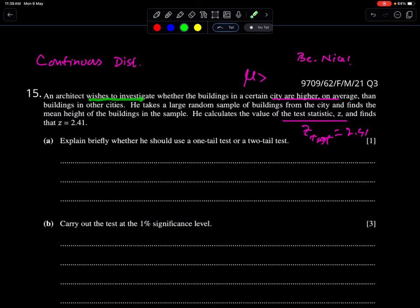An architect wishes to investigate whether the buildings in a certain city are higher on average. So he is looking for an increase in mu. He should perform the upper tail test, one tail test. He takes a large random sample of buildings from the city and finds the mean height of the buildings in the sample. He calculates the value of the test statistic Z, which is 2.41.